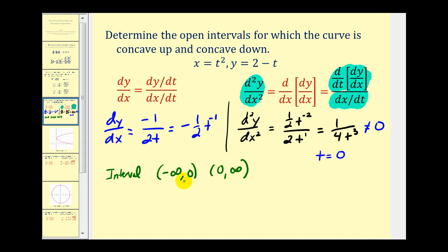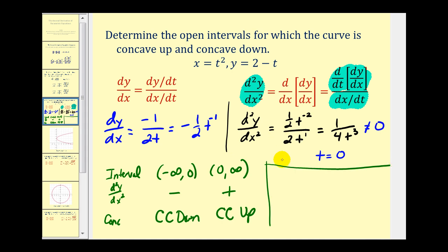We determine the sign of the second derivative in each interval, and from that sign determine whether the curve is concave up or concave down. Using t equals negative one, the second derivative will be negative, so this entire interval is concave down. Using t equals one, the second derivative will be positive, so the curve is concave up on that interval. To summarize: the curve is concave down when t is less than zero, and concave up when t is greater than zero.